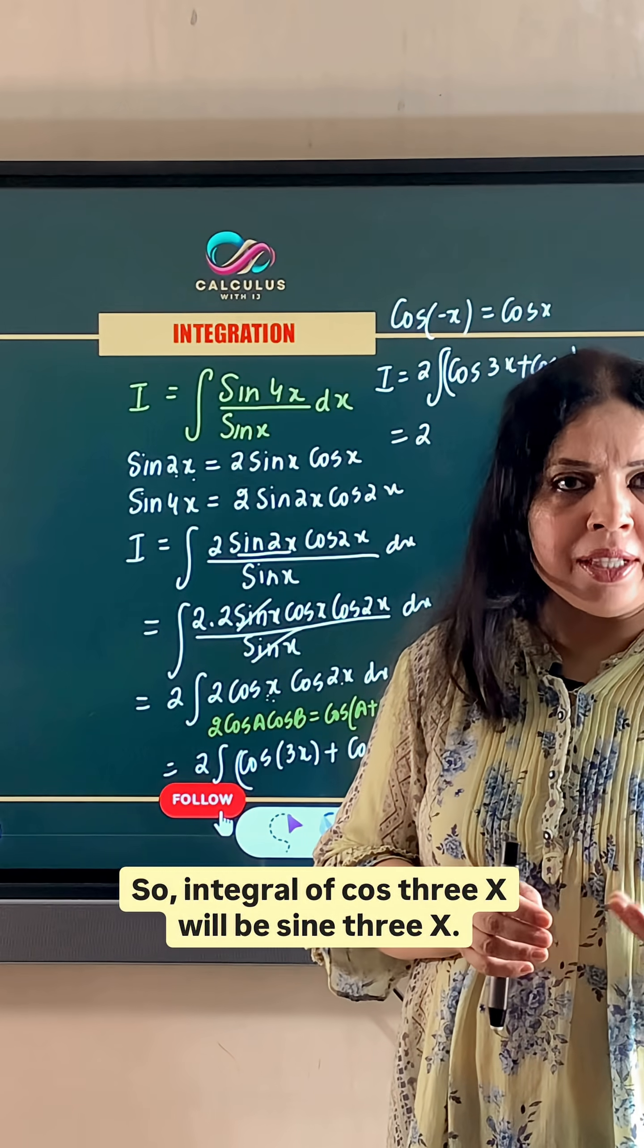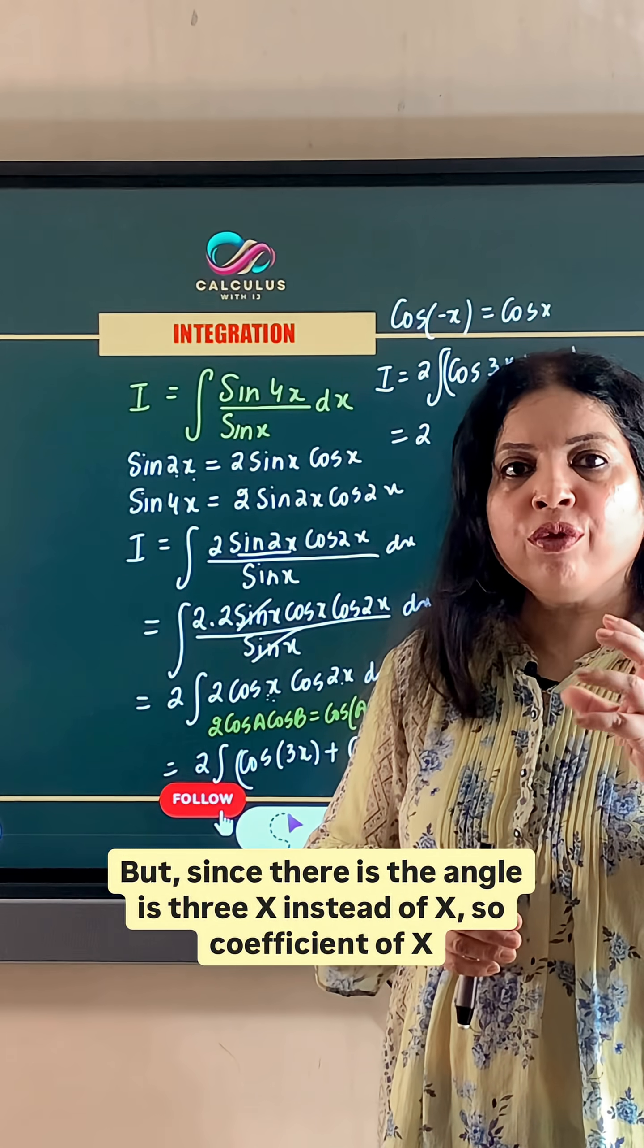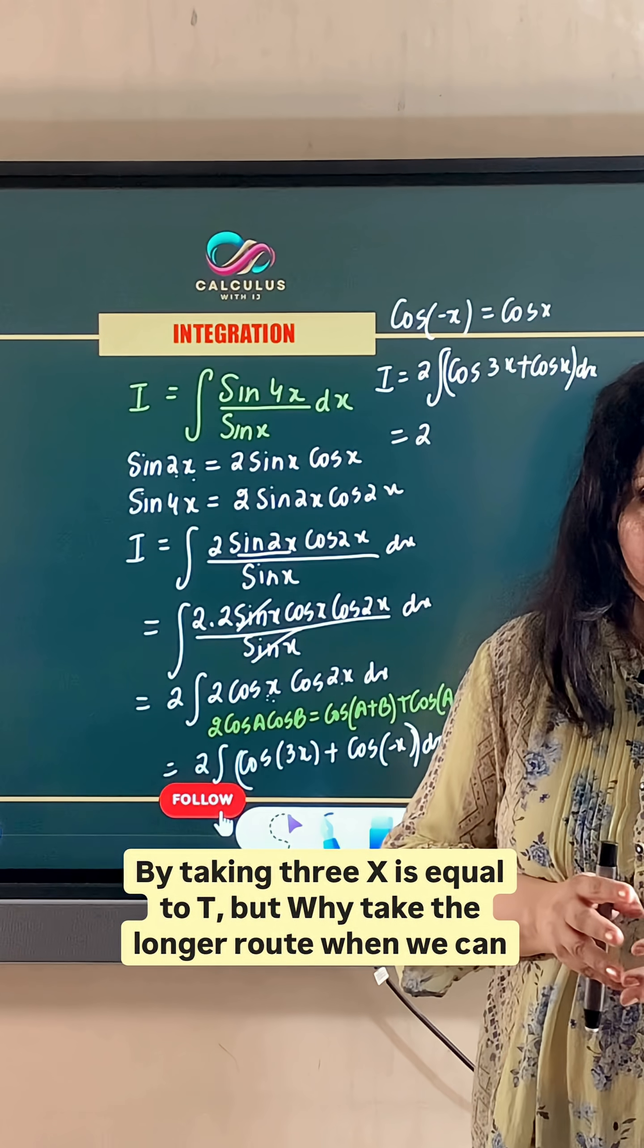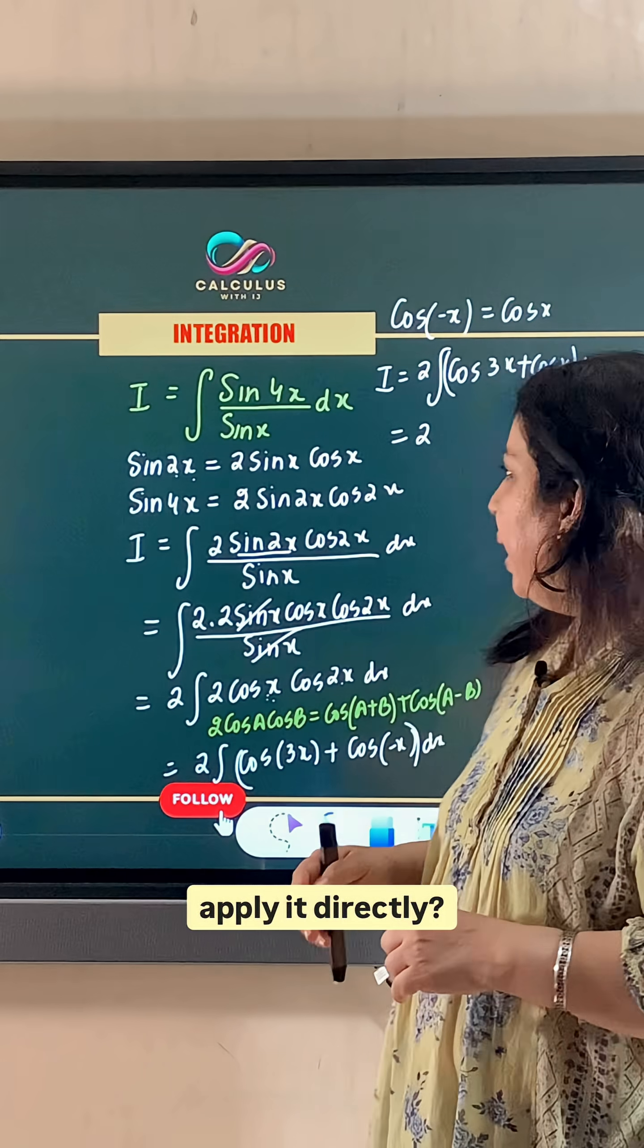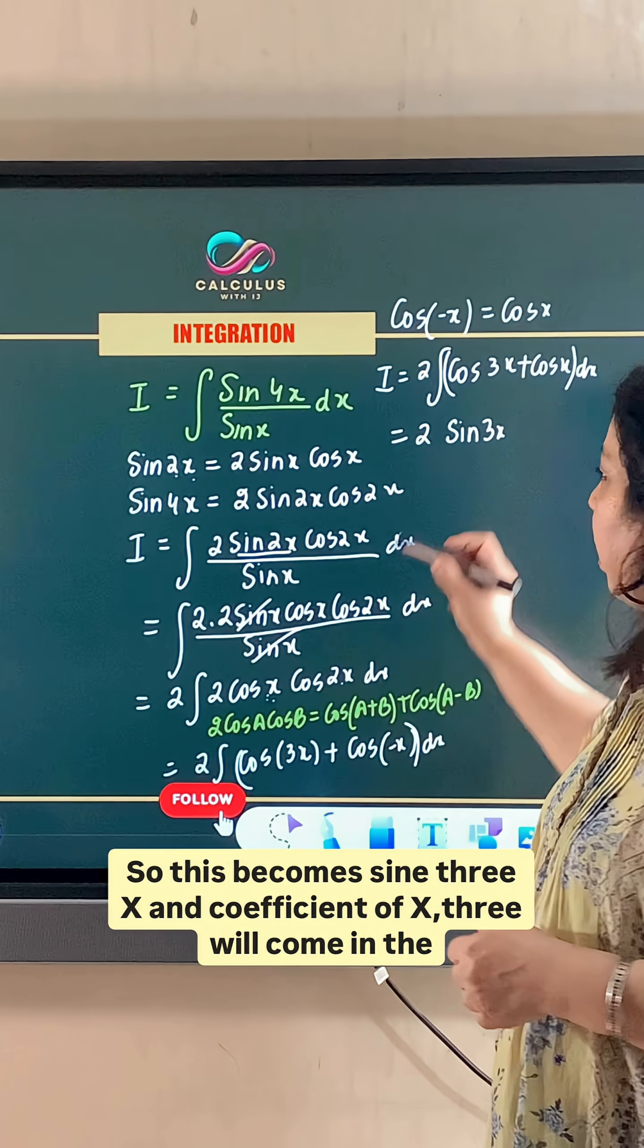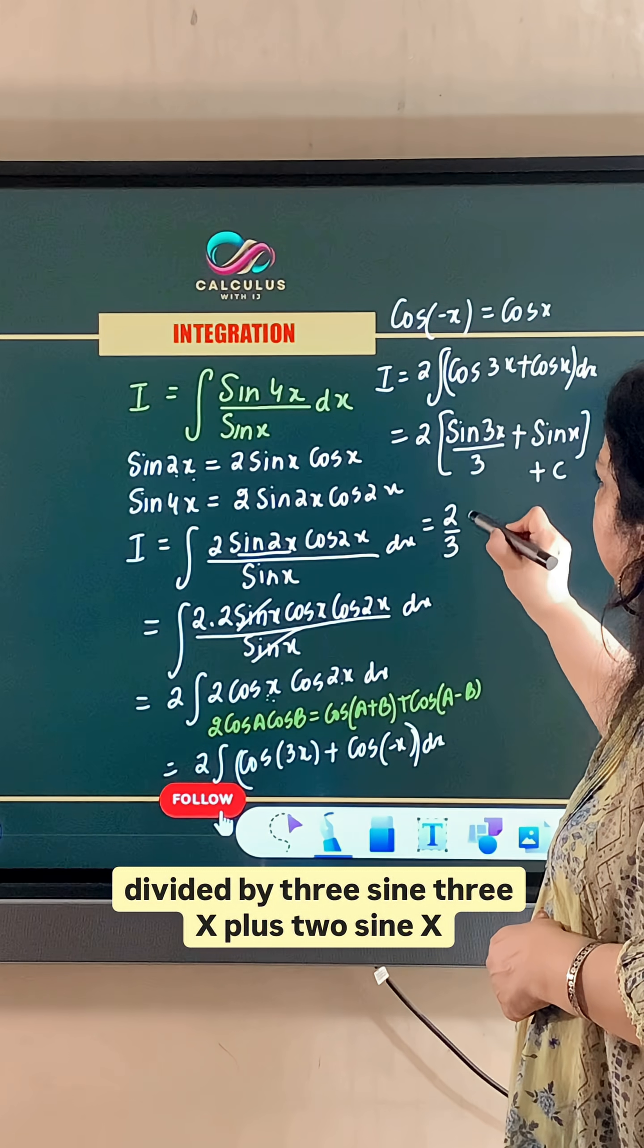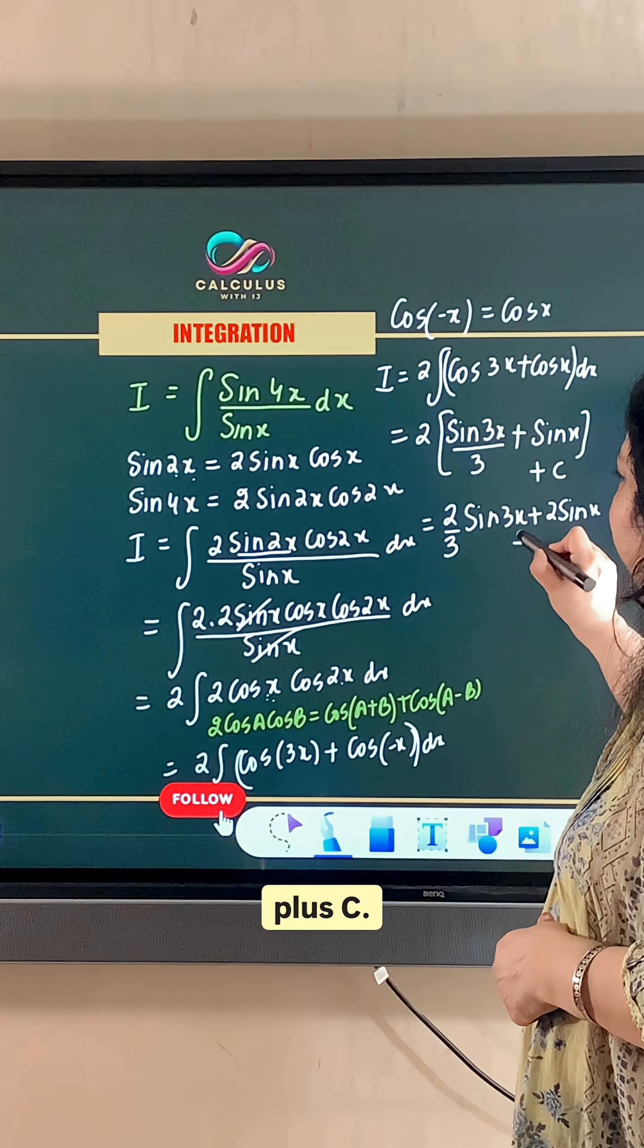But since the angle is 3x instead of x, so coefficient of x3 will come in the denominator. We can also do substitution method in this case by taking 3x is equal to t. But why take the longer route when we can apply it directly? So this becomes sin 3x. And coefficient of x3 will come in the denominator. And integral of cos x is sin x plus c. So our final answer is 2 divided by 3 sin 3x plus 2 sin x plus c.